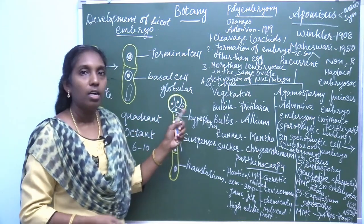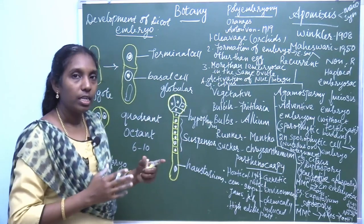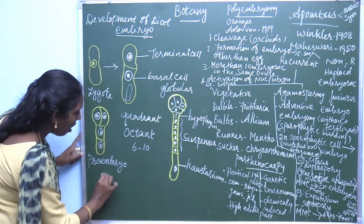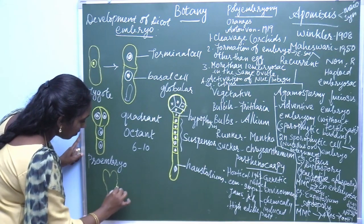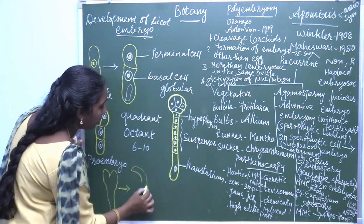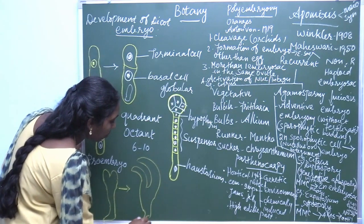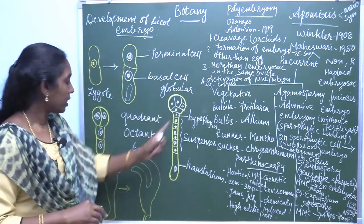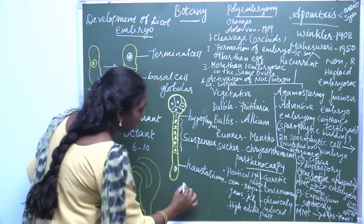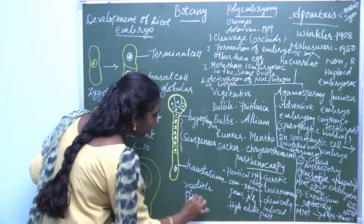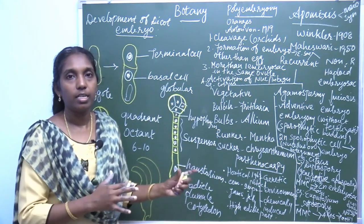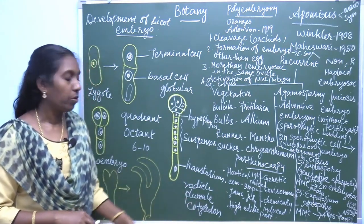Further division takes place. A transverse division and two vertical divisions take place in the hypophysis, and the embryo becomes heart-shaped. Further division makes it horseshoe-shaped — a curved horseshoe-shaped embryo is developed. The embryo undergoes divisions from globular to heart-shaped to horseshoe-shaped. The mature embryo contains radicle, plumule, and cotyledon. The seed also contains these: radicle, plumule, and cotyledon.